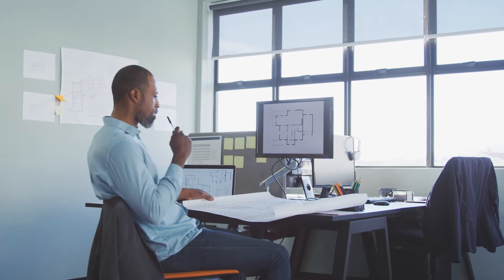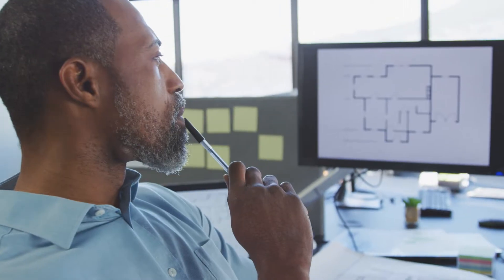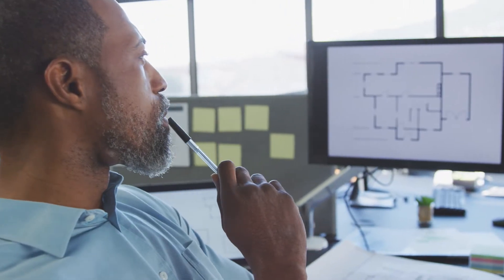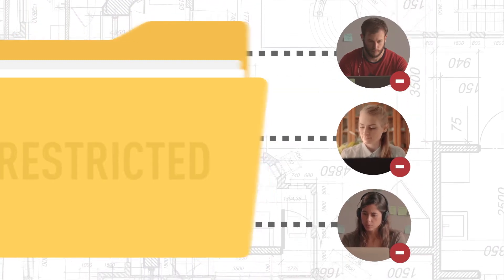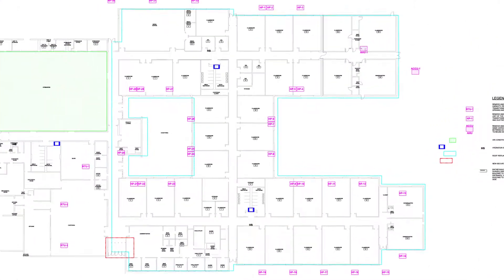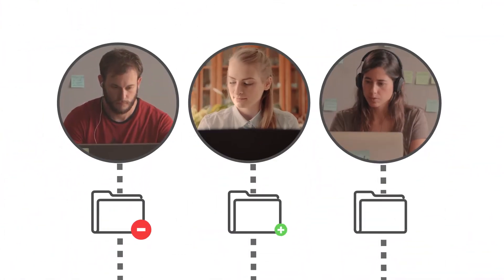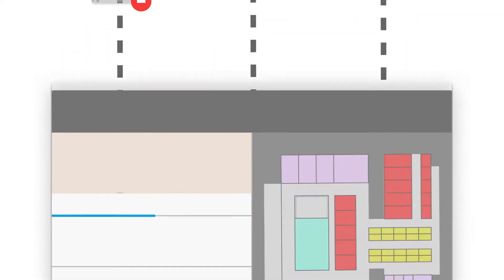One of the most basic and important pieces of facilities management information is the floor plan. Usually, floor plans are a series of CAD or BIM files stored somewhere on a shared network drive in a folder with restricted permissions. You need to have the software and training to use the right tools to open and manage those files, which means only a few people in an organization can typically use them.